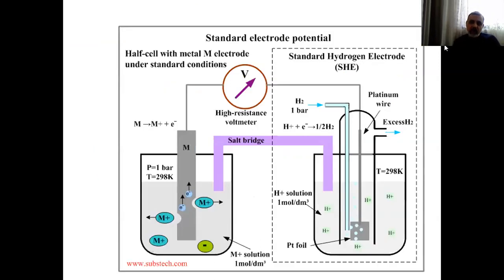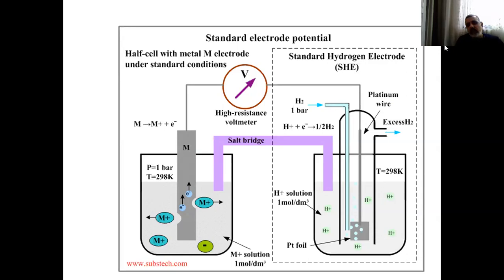Let's look at electrode potential. As you see here, there are two different compartments. The first one is the standard hydrogen electrode on the right-hand side, and on the left-hand side, a metal M electrode under standard conditions. In order to run this reaction, we need to use a platinum wire, because platinum is an inert, noble metal that doesn't easily react with any solution. This is the reason why platinum is preferred for this purpose.